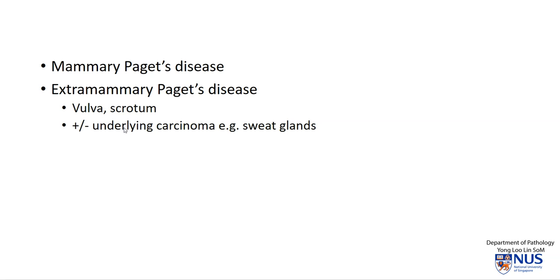I just wanted to make a note that there are different conditions with the same name or similar name, Paget's disease. The example we have just seen is mammary Paget's disease. There is also extramammary Paget's disease, which often affects the external genitalia. These are also similarly involvement of the epidermis with malignant cells, which often are apocrine in nature, originating from adnexal tissues like sweat glands. And there also may be, in a lower percentage of patients, the presence of underlying carcinoma, for example of the sweat glands.